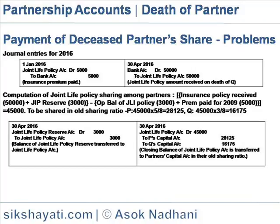Journal entries for 2016. On 1st January, joint life policy account is debited 5,000 to bank account 5,000 — insurance premium paid on 1st January 2016. On 30th April, bank account is debited 50,000 to joint life policy account 50,000 — joint life policy amount received on the death of Q.